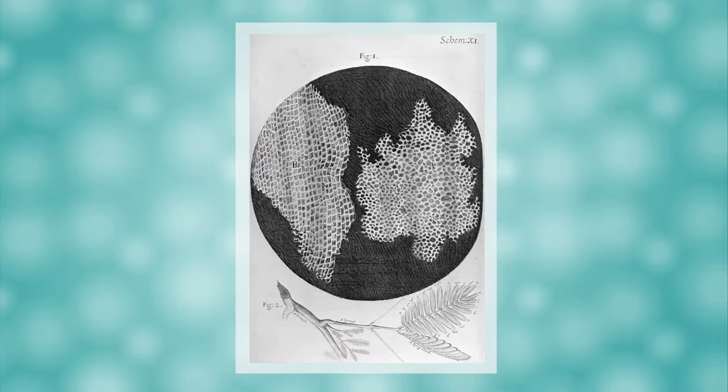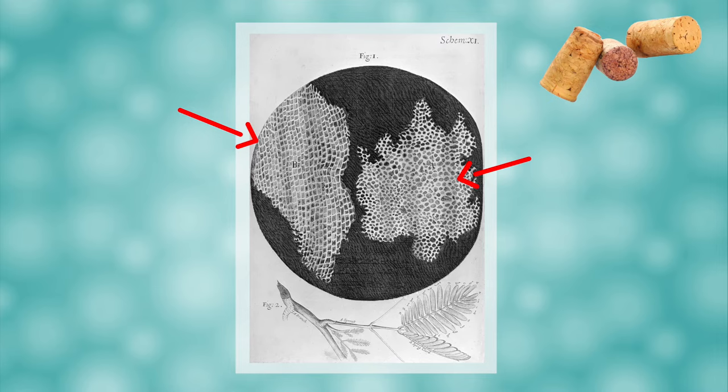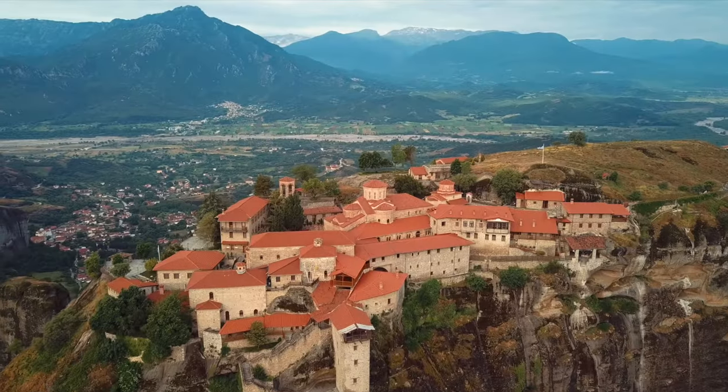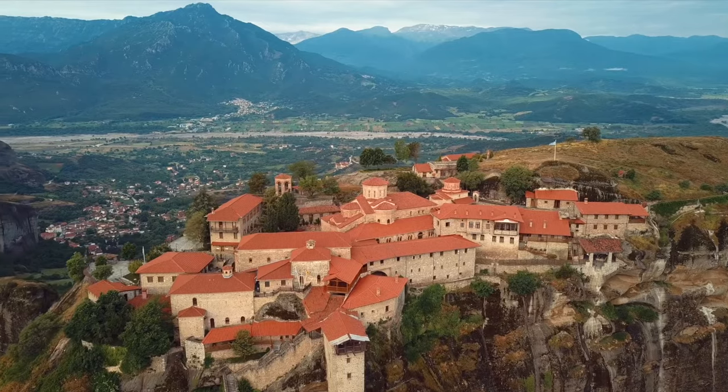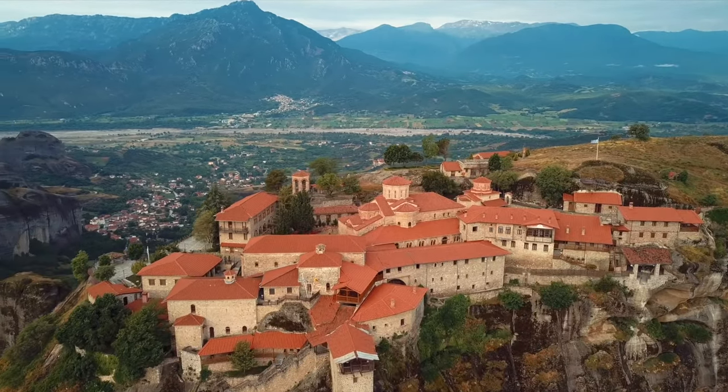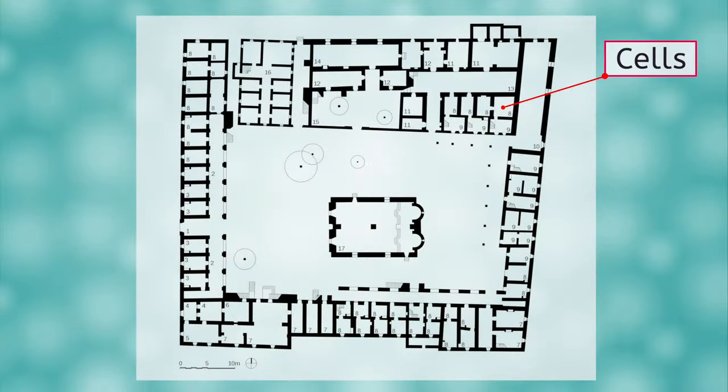Of course he also saw these little guys, our mystery photo from earlier. This is what he saw when he put a slice of cork under the microscope. He was actually seeing dead plant cells though he didn't realize it at the time because the concept of cells hadn't arisen yet. He thought they looked like the tiny rooms that monks live in at a monastery which are called cells and the name stuck. Here is a floor plan of a monastery. I can see the resemblance.